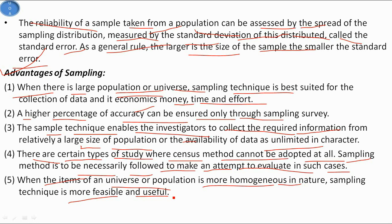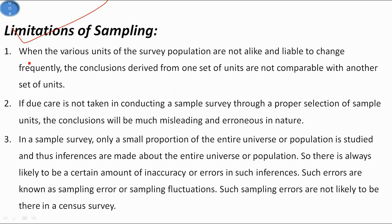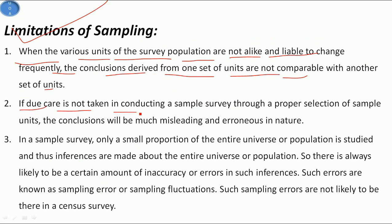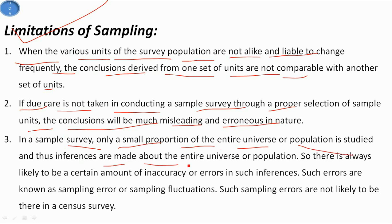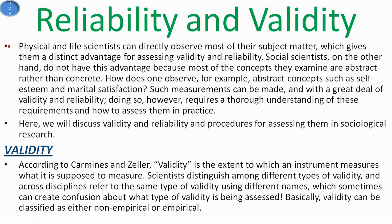Limitations of sampling include: when various units of the survey population are not alike and liable to change frequently, conclusions from one set of units may not be comparable with another set. If due care is not taken in selecting sample units, conclusions will be misleading and erroneous. In a sample survey only a small proportion of the entire universe is studied, so there is always likely to be some inaccuracy or errors in the inference — these are known as sampling errors or sampling fluctuations, which are not present in a census survey.